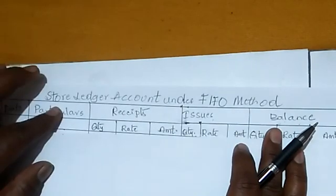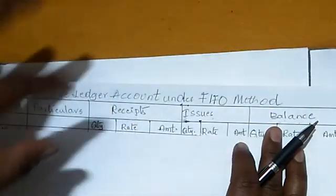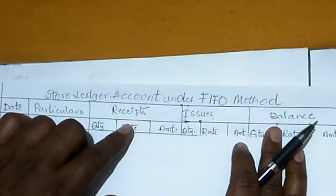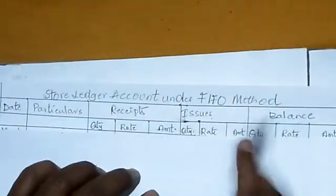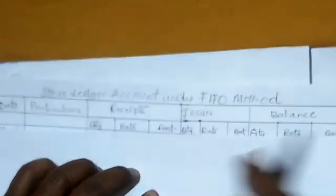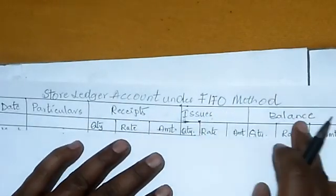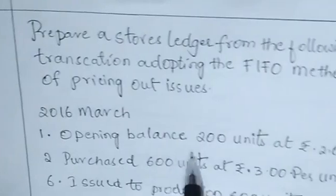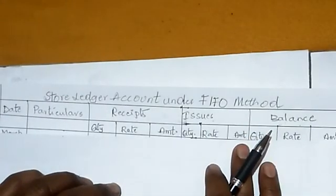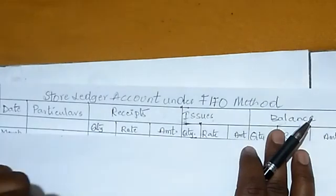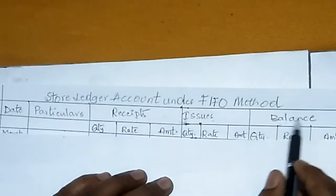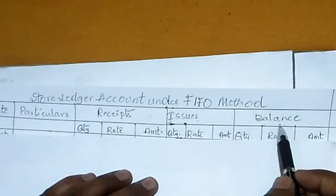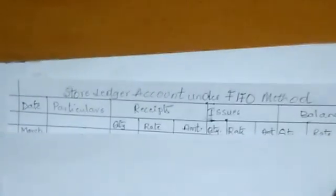In the date column we write the date and year. In the particulars column we enter receipts or issues. In the receipt column we enter only receipts. In the issue column, whatever is issued from the store, all those are entered in the issue column. In the balance column we show the balance. So now let us solve the problem. First, 2015 opening balance: 200 units at rupees 2 per unit.